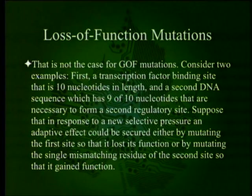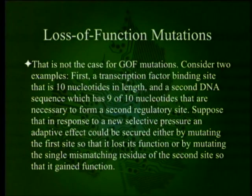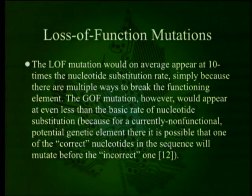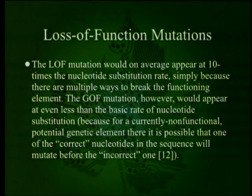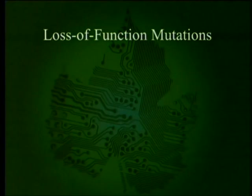Research over the past 50 years has shown that many genetic elements consist of multiple nucleotides. Protein-coding regions can be thousands of nucleotides in length, RNA genes can be hundreds of nucleotides, and regulatory elements can be several to dozens of nucleotides long. A substantial portion of possible mutations in these elements will result in the diminution or loss of their function. Thus, as a class, loss of function mutations for a particular genetic element will occur at a rate from several times to several orders of magnitude greater than the basic nucleotide substitution rate. That is not the case for gain of function mutations.